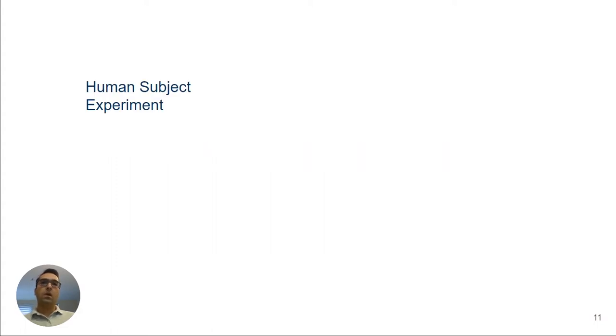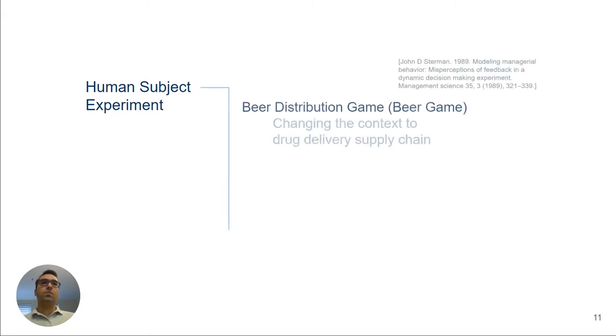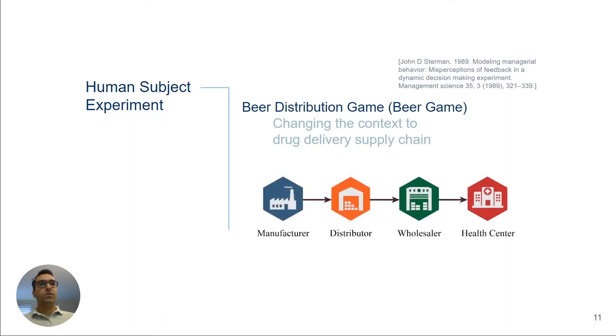To answer this question, we conducted a human subject experiment using the beer distribution game. The beer game is suitable for studying behavioral factors in supply chains because it's simple enough to be learned quickly, and at the same time, it can retain key features of the real supply chain. We just changed the context to drug delivery supply chain to stay in line with our previous study.